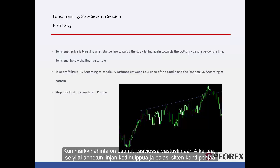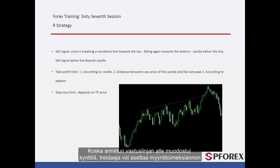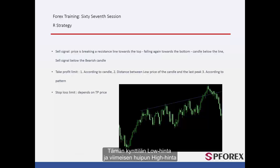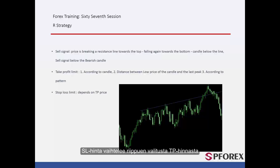On the graph, after the market price hit the resistance line four times, it crossed the line towards the top and then returned towards the bottom. As a candle formed under the resistance line, a trader could place a sell order. TP prices could be determined by the bearish candle length, the distance between the low price of this candle and the high price of the candle on the last peak, and also a flag pattern detectable in a shorter timeframe. SL price varied based on the selected TP price.